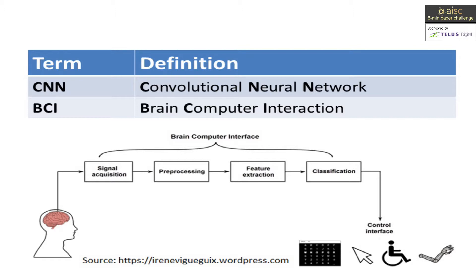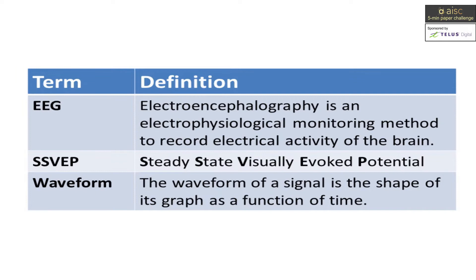BCI requires the use of manual pre-processing and feature extraction stages to transform the data into a suitable format for prediction tasks. Electroencephalography is the most common data acquisition approach in BCI. SSVEP enables the measurement of neural activity in response to flickering stimuli that the subject is fixated upon, and can be used to aid people with severe physical disabilities via BCI applications.